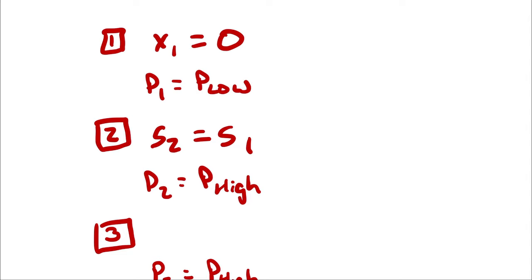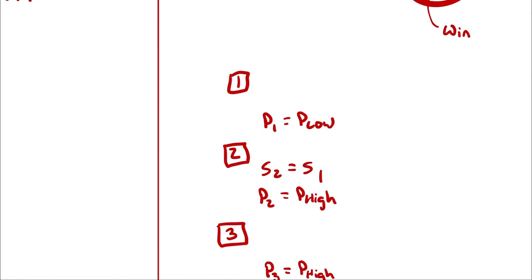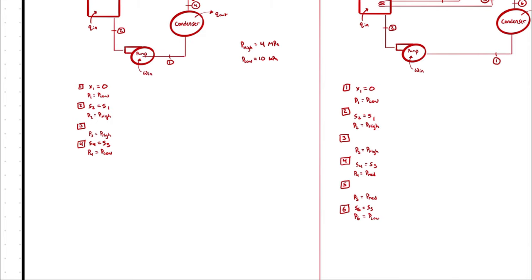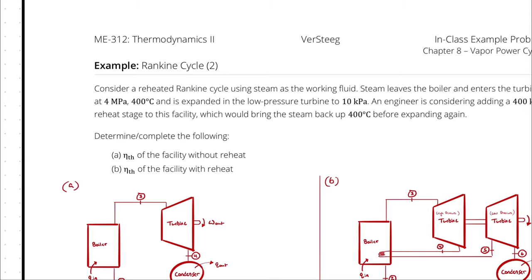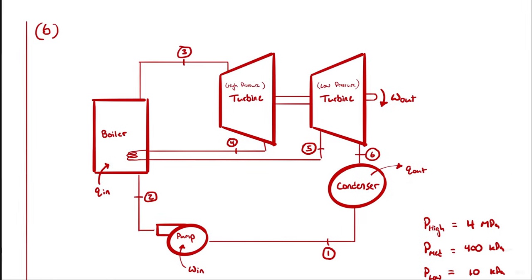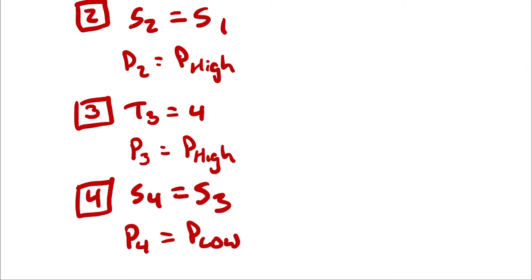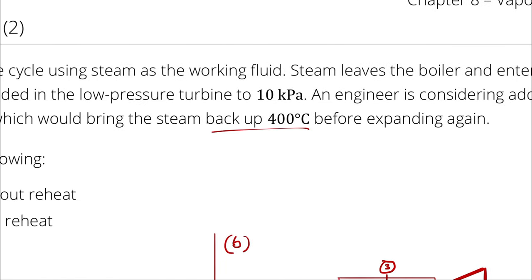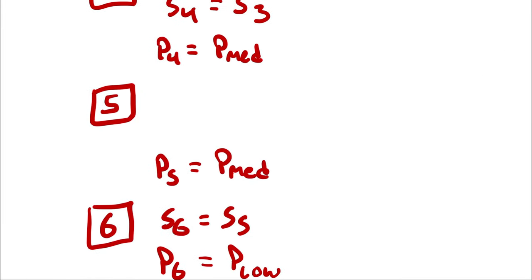That saturated liquid assumption holds unless given information indicating otherwise, such as a specified subcooling or compressed liquid condition. Our final independent intensive property comes from the given turbine inlet temperature: T3 equals 400 degrees Celsius in both cycles. For the reheat version, the reheat stage also brings the temperature back up to 400 degrees Celsius, so T5 is also 400 degrees Celsius.